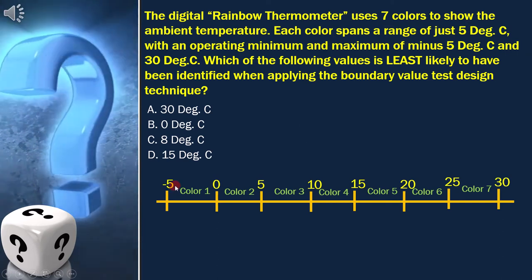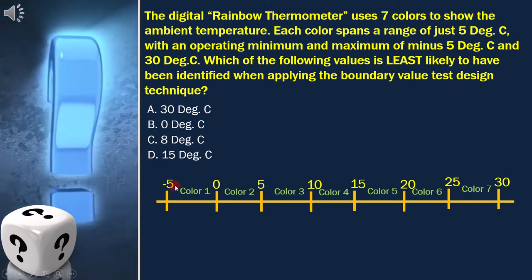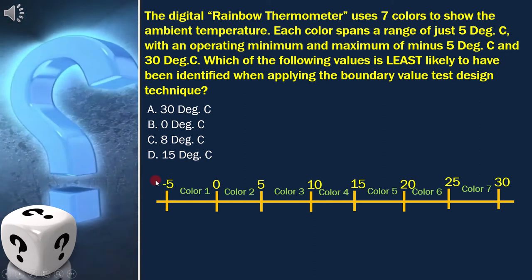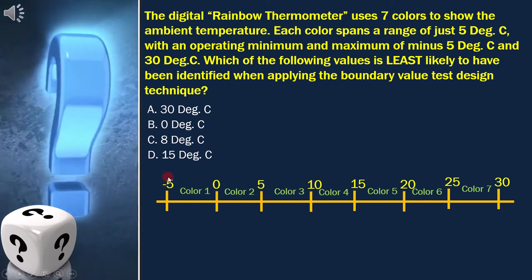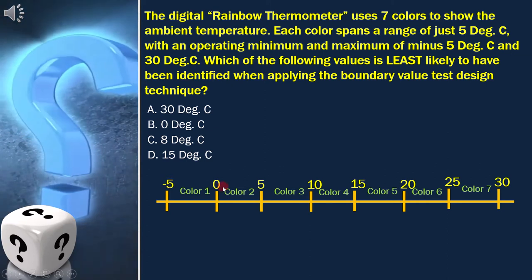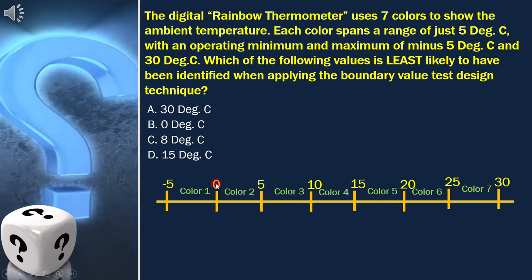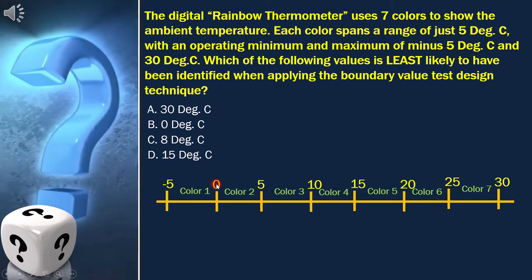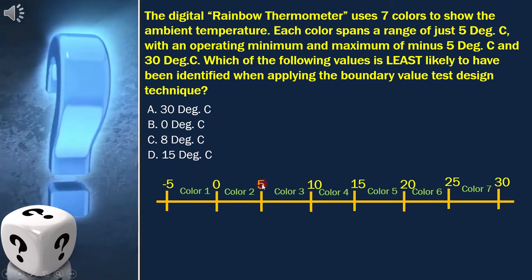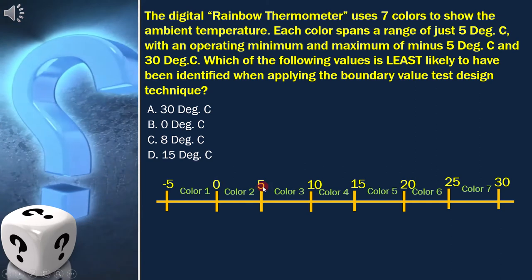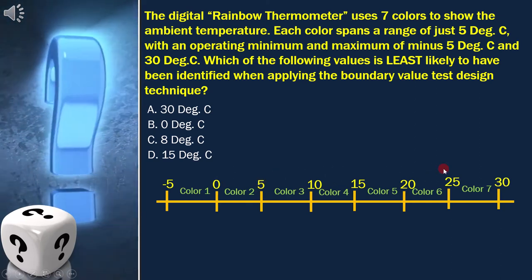For each of the 7 bands, we have to draw the boundary starting from minus 5. So in minus 5, we have to add 5 and we will get 0, and 0 is the next boundary. Now in 0, we have to add 5 and we will get 5. Likewise, we have to continue until we reach 30.